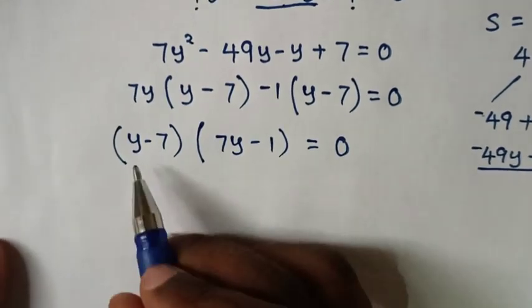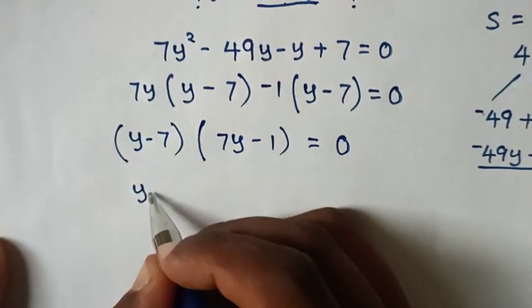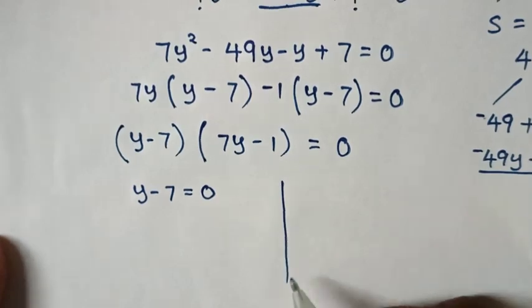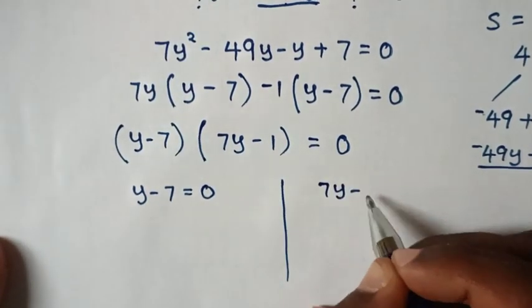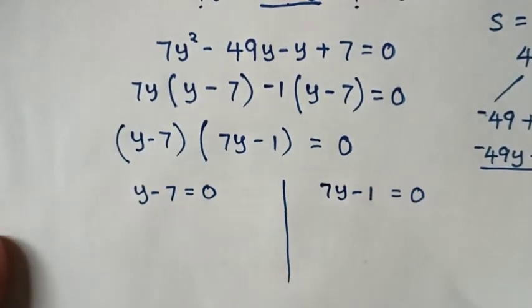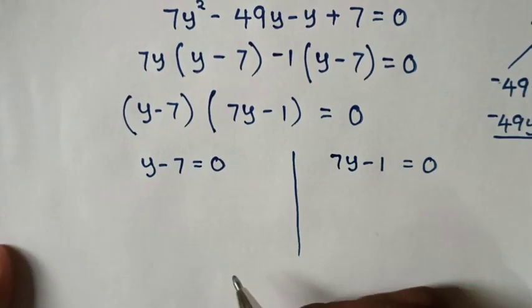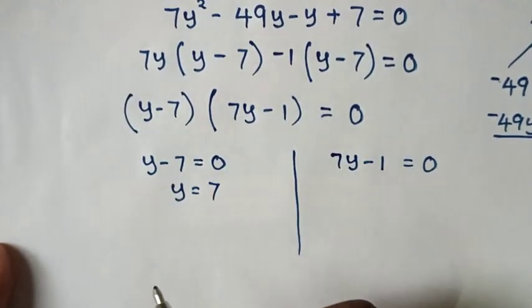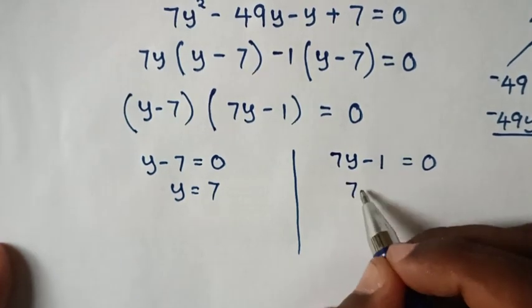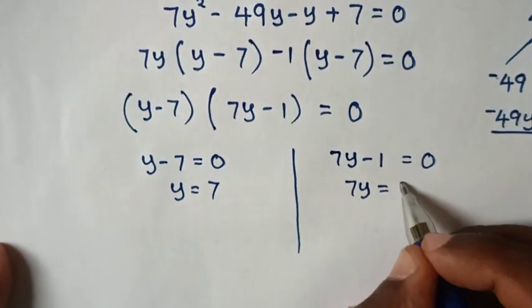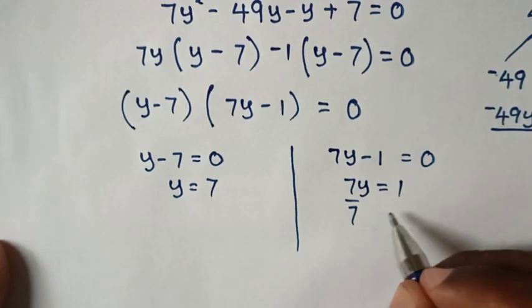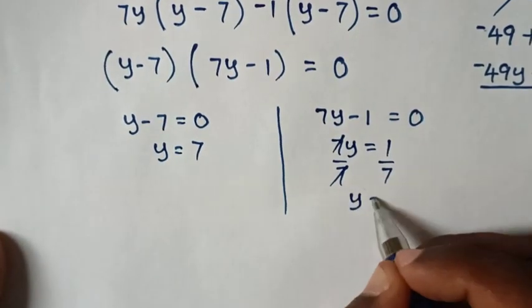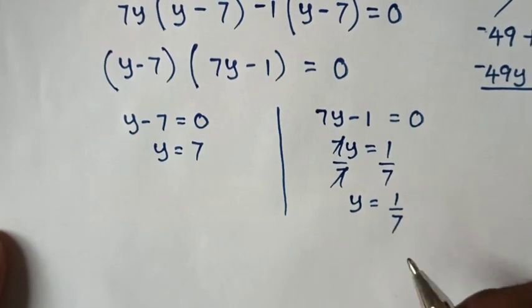We now have two solutions. From y - 7 = 0, we get y = 7. From 7y - 1 = 0, we get 7y = 1, so dividing both sides by 7 gives y = 1/7.